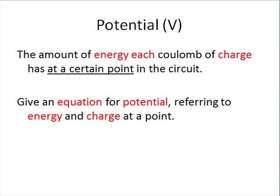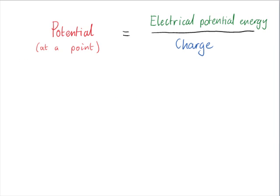So if potential means energy per charge, what would a formula for potential be? The symbol for potential is V. Various symbols are used for energy — we can say E, or we can use U for electric potential energy. Charge's symbol is Q. Potential is electrical potential energy per charge.